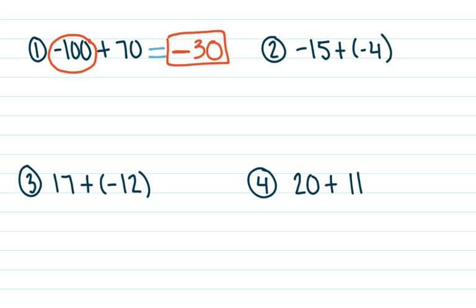Let's take a look at number two: negative 15 and negative 4. These are both negatives, meaning they are on the same team. In terms of my army example, we have 15 negative army guys and 4 negative army guys — a total of negative 19. They're both negatives, so you always check the signs. If they're the same sign, you just add them together. On number one, we had different signs, so there's a battle and the numbers cancel out some zero pairs.